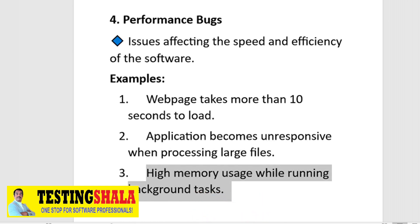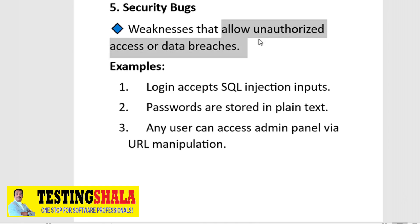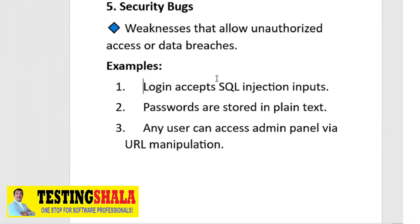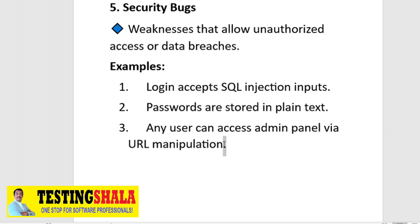The fifth type is security bugs — weaknesses in the application that allow unauthorized access or data breaches. Examples include: login accepts SQL injection inputs, passwords are stored in plain text instead of being encrypted, or any user can access the admin panel via URL manipulation. All these kinds of bugs should be logged under security bugs.